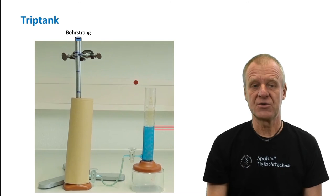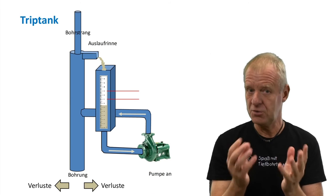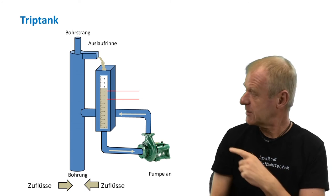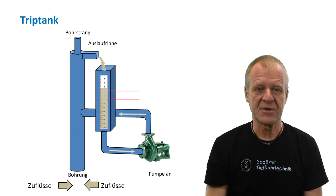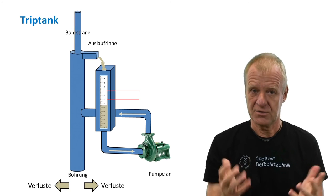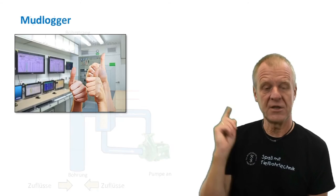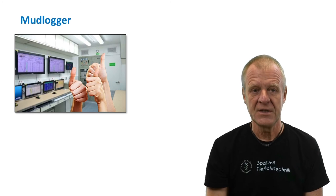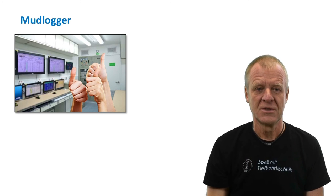As long as everything is okay, then we are fine. But should we have losses or inflows in the borehole while tripping, the indication on the scale in the trip tank will no longer correspond to what we expect it to be. So, we immediately see that something is wrong somewhere. The mud logger and the drilling crew continuously observe the level of the trip tank during tripping. As long as the mud logger gives a thumbs up, then all is balanced and okay. Otherwise, something is wrong and an alarm is given.